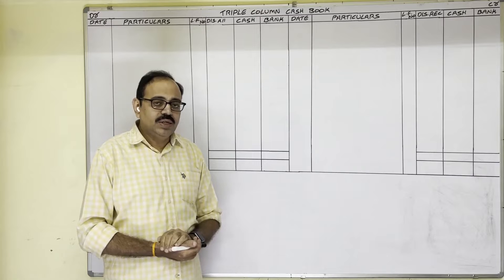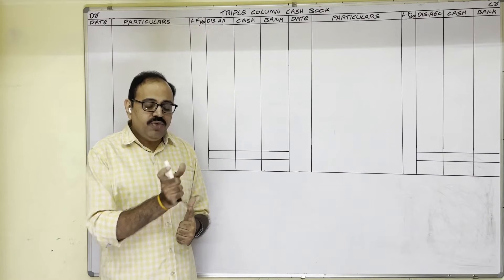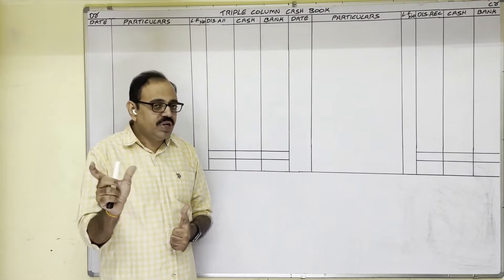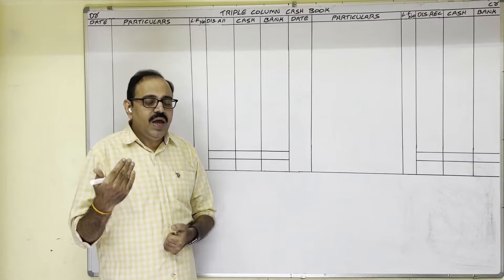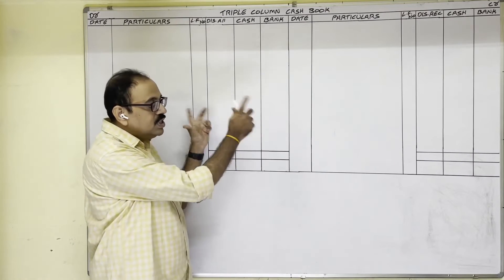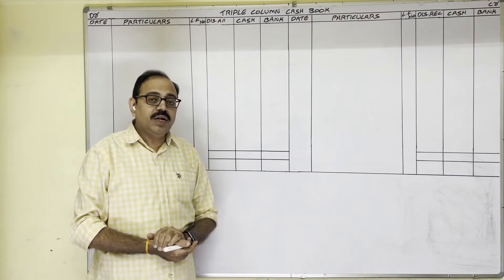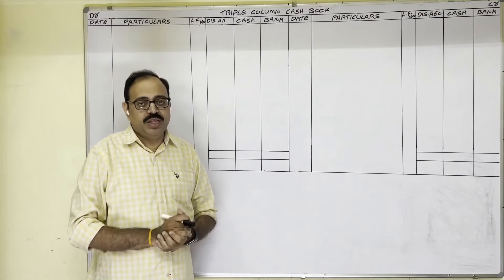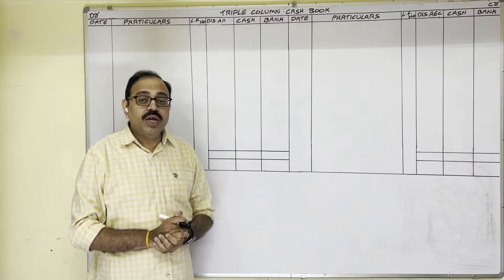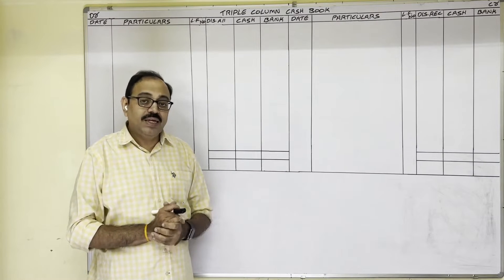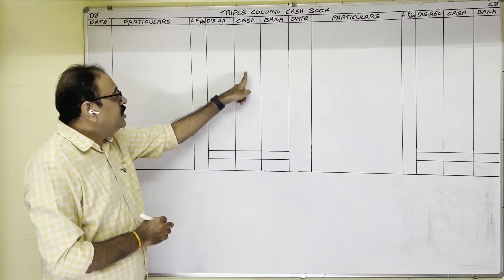There are two methods to record transactions in the triple column cash book. The first is the journal entries method — for every transaction you think of the journal entry and post it into the cash book. The second method is the hints method. In this video I'm going to explain the second method: the hints method.